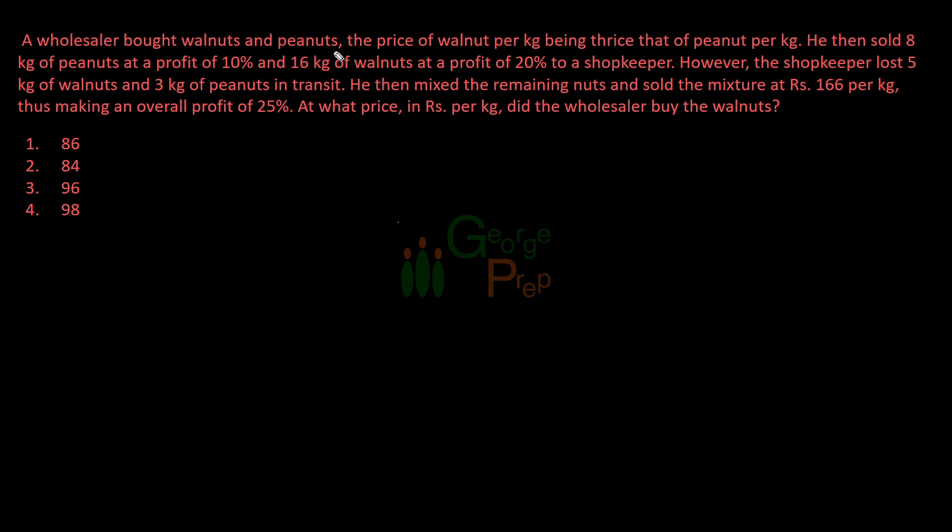A wholesaler bought walnuts and peanuts, the price of walnut per kg being thrice that of peanut per kg. So let me just take price of peanut as P. Then price of walnut will be 3P per kg.